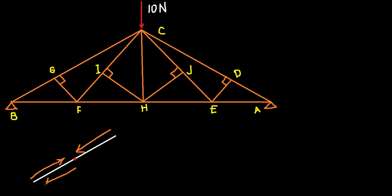That applies not only for compressive forces but also for tensile forces. If we have, say, 10 Newtons of internal force going one way but there's an imbalance, the joint would tend to move toward the side with greater force. So for static equilibrium, the forces must be equal to one another.